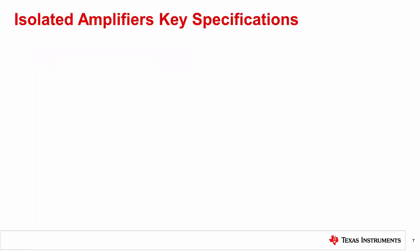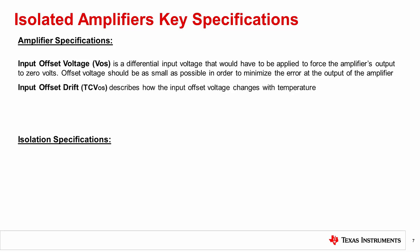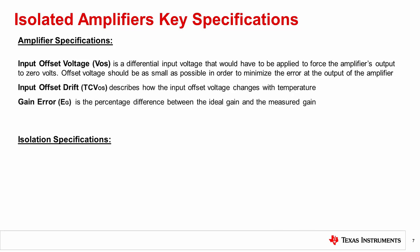When choosing an isolated amplifier, both amplifier and isolation specifications have to be considered. Let's start with defining input offset voltage. Input offset voltage is a differential input voltage that would have to be applied to force the amplifier's output to zero volts. Offset voltage should be as small as possible in order to minimize the error at the output of the amplifier. Keep in mind that the input offset voltage is dependent on changes over temperature, which is quantified by input offset drift. Next is gain error, which is the percentage difference between the ideal gain and the measured gain. To describe the changes in gain over temperature, the gain error drift parameter is used.